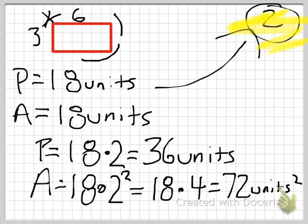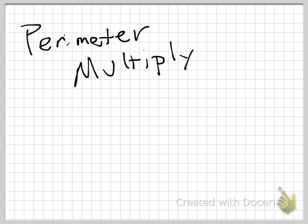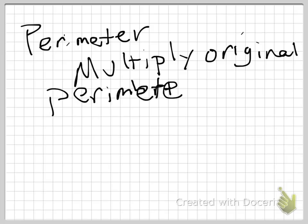So that's a quick, easy way of finding our perimeter and area using a scale factor. I'm just going to remind you really quick. To find perimeter, you're always going to multiply the original perimeter by the scale factor.